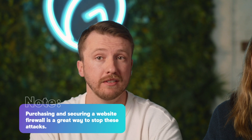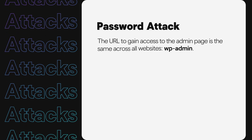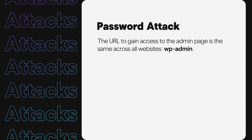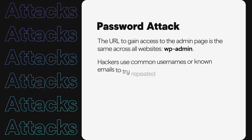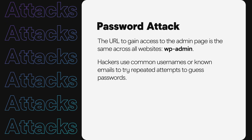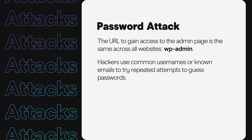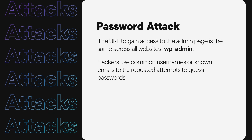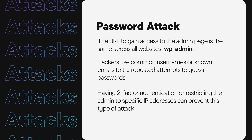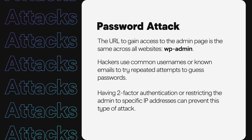Insecure passwords can also allow attackers to gain access through a password attack. With WordPress, the URL to gain access to the admin page is the same across all websites — the forward slash WP-admin. Hackers use common usernames or known emails to try repeated attempts to guess passwords, then use that combination on other websites like your bank to gain access to more critical accounts.